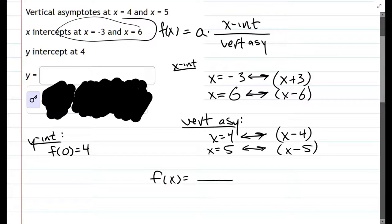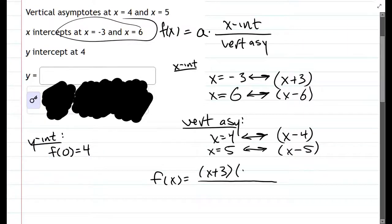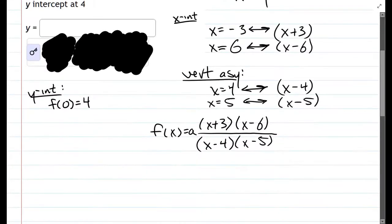The x-intercepts are in the numerator. When I said the power is one, the exponent will be a one here. The other one is x minus six. Denominator is where your asymptotes are. So we're almost done, except there is a number out front we need to figure out. And the way we're going to do that, we've used our x-intercepts, we've used our vertical asymptotes, we're about to use the y-intercept here.